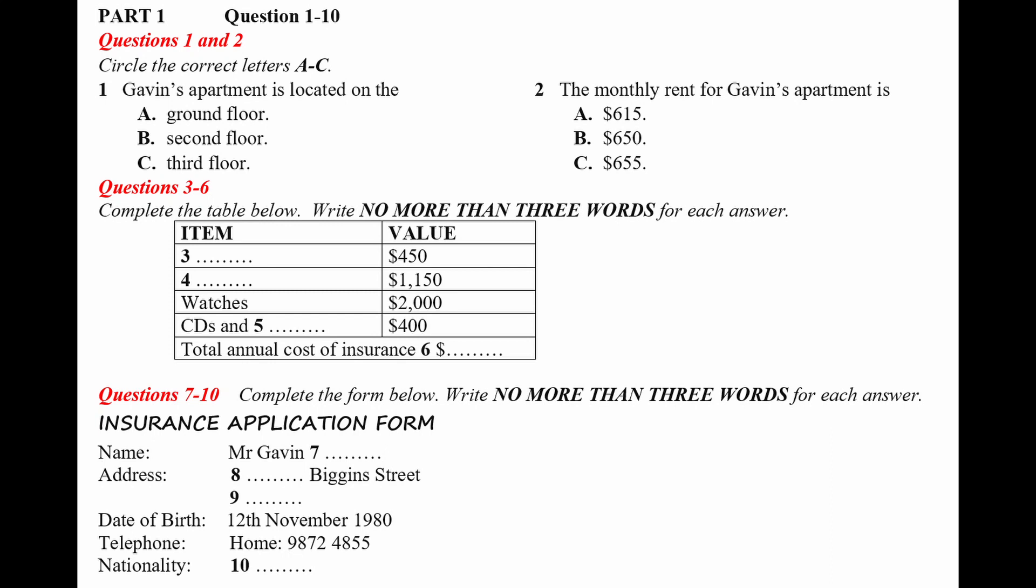And your contact number? Home phone number is 9872-4855. Right. And... You're Australian? No. I was born in London. Although my mother is from Tasmania. Oh, really? Whereabouts? Hobart. I see. Interesting place. Now, are you working at the moment? No. I'm a full-time student at Sydney University. Right. Good.